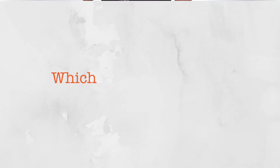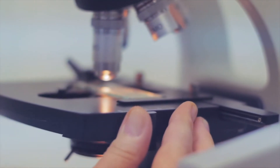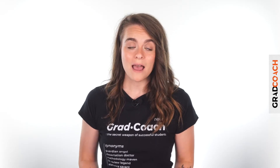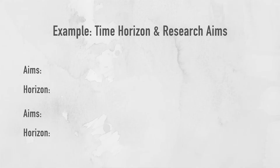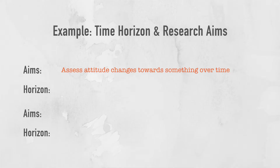Now that we have covered the cross-sectional and longitudinal approaches, the golden question is: which one should I use? Ideally, your choice of time horizon should be determined by your research aims, objectives, and research questions. In other words, your golden thread should heavily influence this research design choice, much like all other methodological choices. If your research aims involve assessing how attitudes towards something change over a period of time, a longitudinal study would generally be a good fit.